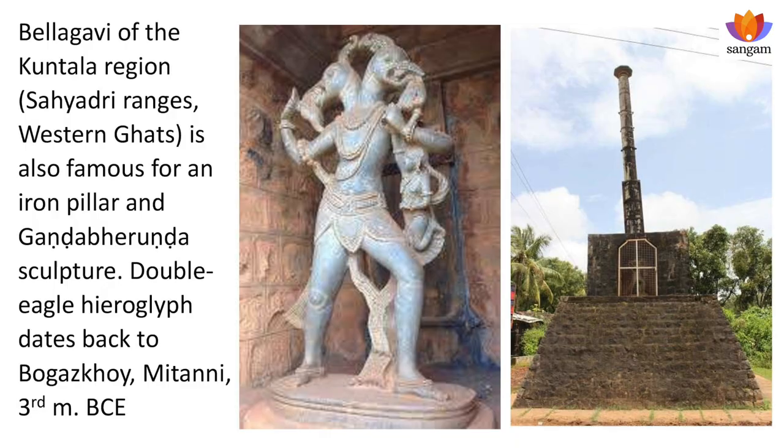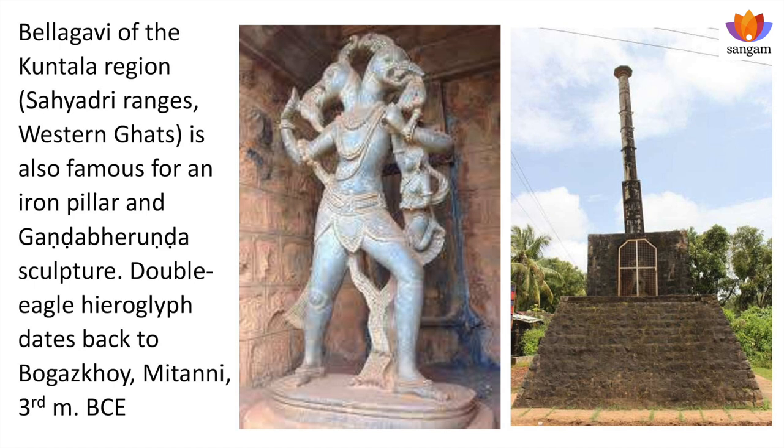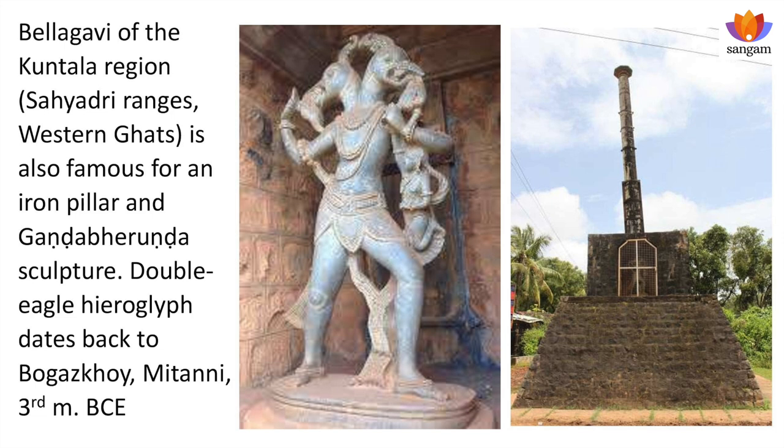Belagavi is a phenomenal tradition in our Hindu history. Belgam near Sahyadri ranges and Western Ghats is also famous for an iron pillar — we know of the iron pillar in Delhi, but there is also one in Belagavi. That temple also had a Ganda Bheerunda sculpture, a double eagle, anthropomorphic as a human being. We will demonstrate that this anthropomorphic composition of two-headed eagles of a warrior, a hero, dates to Bogaskai-Brittani of the third millennium BCE. The Ganda Bheerunda statue was supposed to be mounted on top of this pillar but was later displaced and is kept separately near the pillar today.